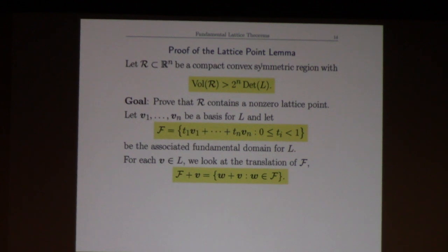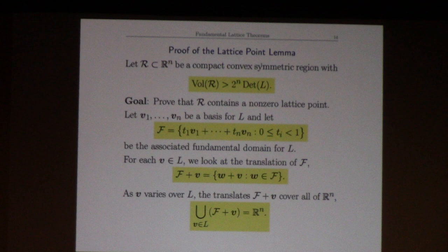For each element of the lattice I'm going to translate that fundamental domain by the point in the lattice. So for each lattice point I'll write F plus v to be the points in the fundamental domain - I'm going to say parallelogram because parallelepiped is too much of a mouthful - and you translate it by this lattice vector v. We saw pictures of that before - you have the parallelogram, you shift it up, you shift it over, you shift it up and over and down to the left, down to the right, and so on.